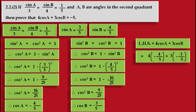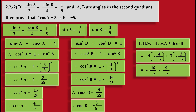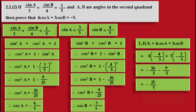Solving these brackets: the first term gives 4 times 4 equals 16, so minus 16 upon 5. The second term gives 3 times 3 equals 9, so minus 9 upon 5. Now, since the denominator is common, we add the numerators: minus 16 minus 9 gives minus 25, upon the common denominator 5. So we get minus 25 upon 5, which is equal to minus 5, which is our required right hand side.